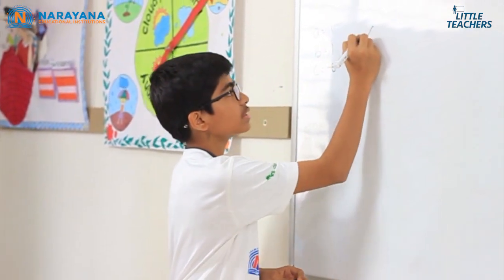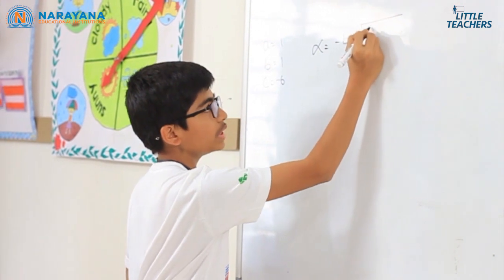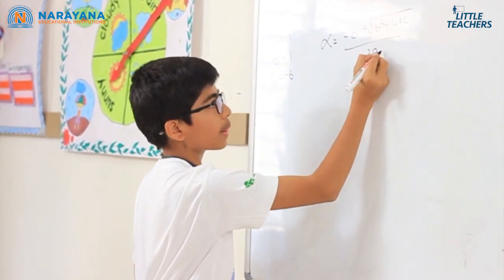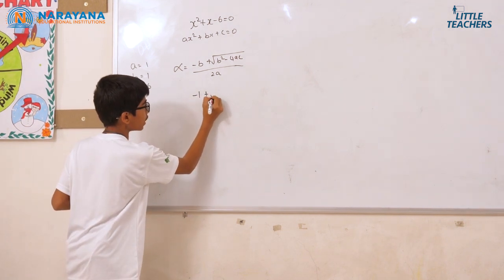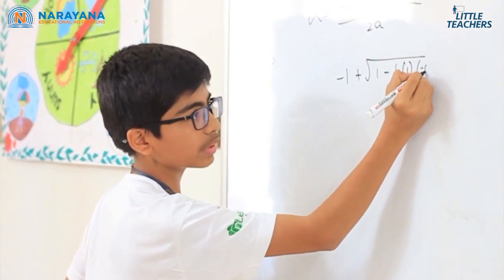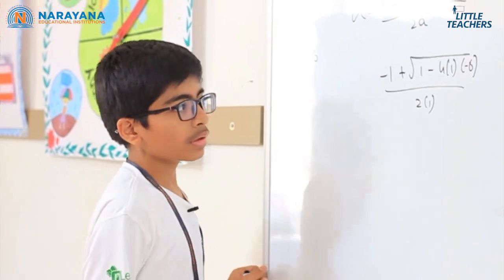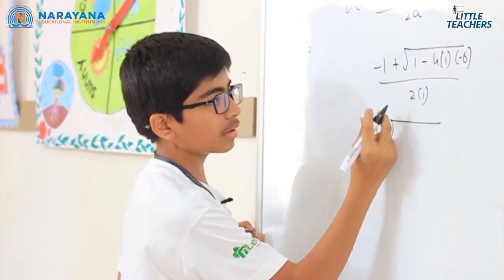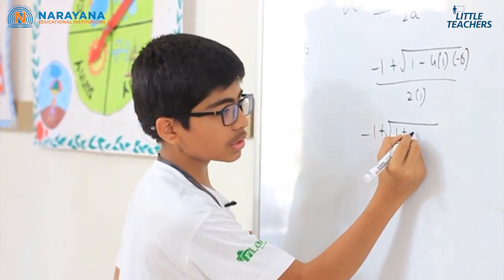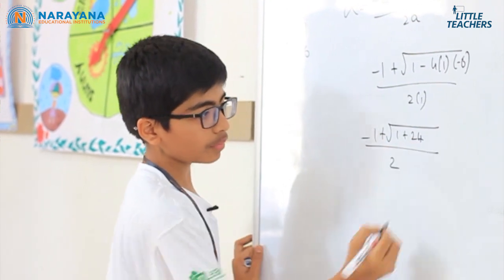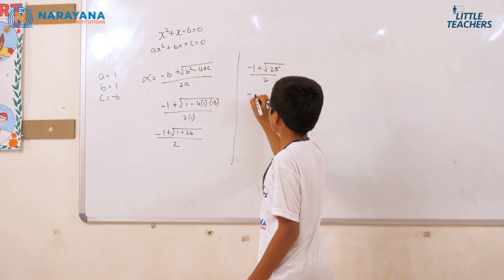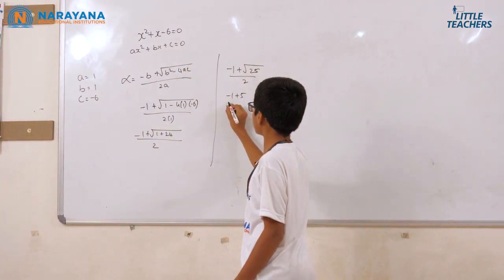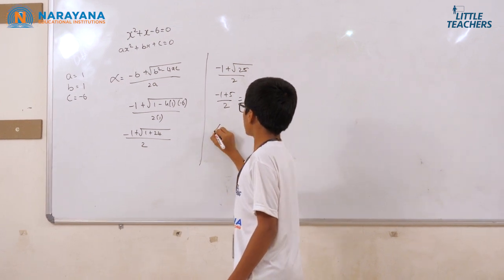Can anyone tell me the alpha formula or the story behind it? Alpha = (−b + √(b² − 4ac)) / 2a. Substituting the values: (−1 + √(1² − 4·1·(−6))) / (2·1) = (−1 + √(1 + 24)) / 2 = (−1 + √25) / 2 = (−1 + 5) / 2 = 4/2. So alpha = 2.